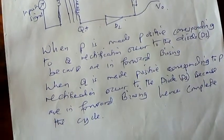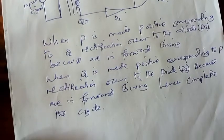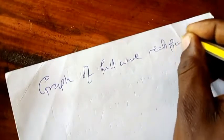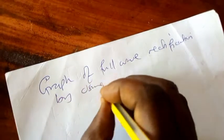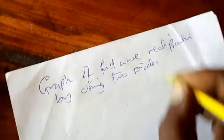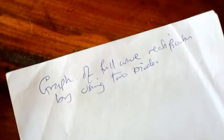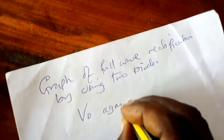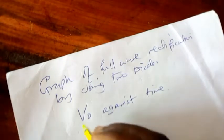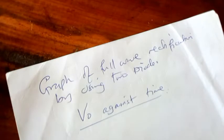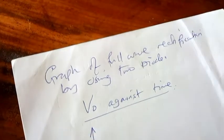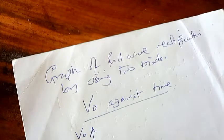So apart from that, later, let's see the graph of full wave rectification by using two diodes. The graph of full wave rectification by using two diodes will look like this. The graph shows output voltage against time. The graph shows the voltage that has been converted over a certain time. This side is output voltage, this side is time.